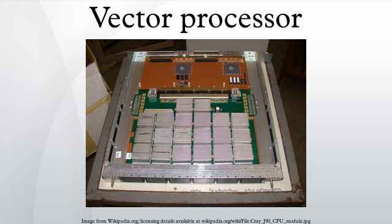Let R be the vector speed ratio and F be the vectorization ratio. If the time taken for the vector unit to add an array of 64 numbers is ten times faster than its equivalent scalar counterpart, then R equals ten. Also, if the total number of operations in a program is one hundred, out of which only ten are scalar, then F equals ninety — that is, ninety percent of the work is done by the vector unit. Even if the performance of the vector unit is very high, we get a speedup less than R, which suggests that the ratio F is crucial to the performance. This ratio depends on the efficiency of the compilation, like adjacency of the elements in memory.